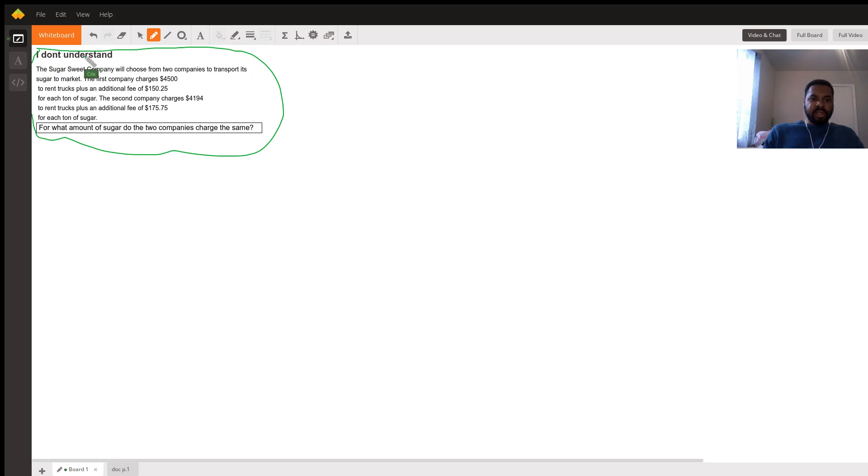The student says 'I don't understand' - we've all been there. Sweet Sugar Company will choose from two companies to transport its sugar to market. The first company charges $4,500 to rent trucks plus an additional fee of $150.25